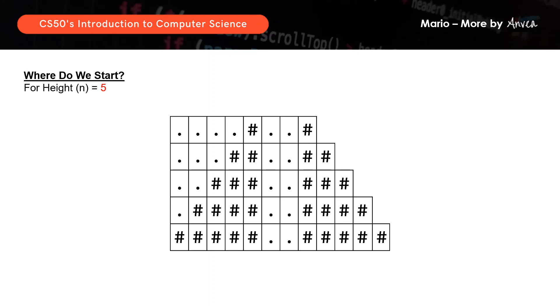I represents the row, and J represents the column. What we want is for the code to print a table, and we need to tell the code how many rows and columns to print, and also when to print hashes and when to print spaces — the spaces will be represented by dots. Before we dive in, we need an overview about what needs to be done. What will be the structure of our code?